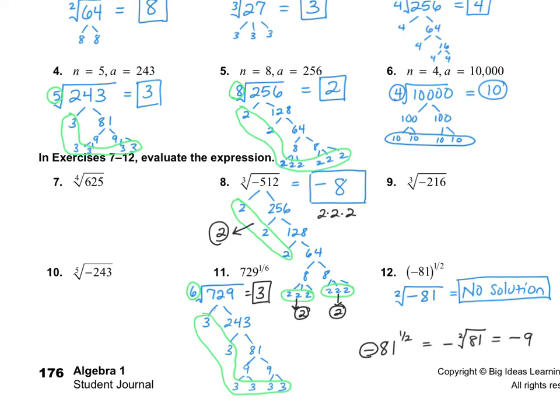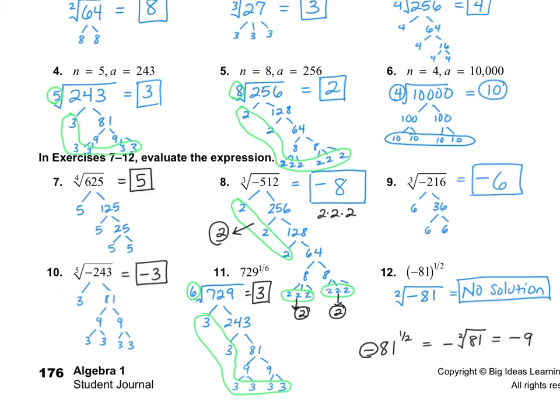I would like for you to do numbers 7, 9, and 10 on your own. For number 7, I got 5. Number 9 is negative 6, and number 10 is negative 3.